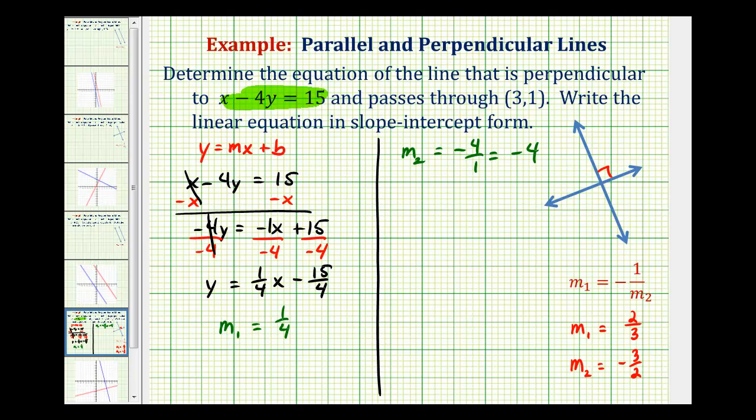So now that comes down to determining the equation of a line that has a slope of negative 4 and passes through the point (3, 1). And we'll do this using the point-slope form of a line.